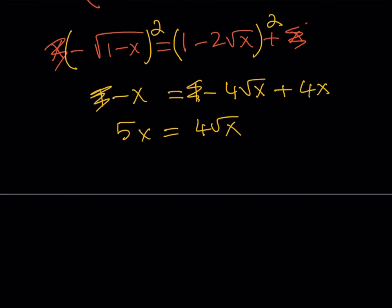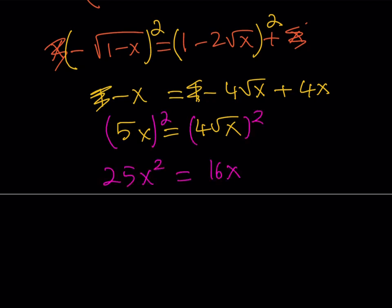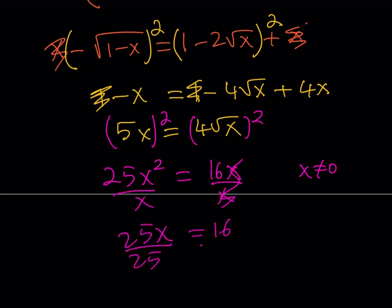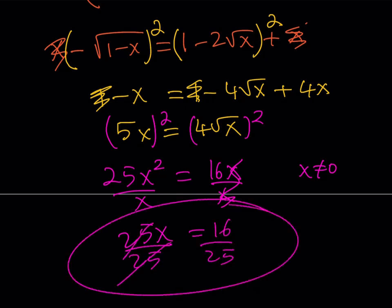If we square both sides again, we get 25x squared is equal to 16x. Since x does not equal 0, we divide both sides by x, giving 25x equals 16, and finally dividing by 25 gives x equals 16 over 25. This brings us to the end of the video. Thank you for watching. I hope you enjoyed the video. I'll see you tomorrow with another video. Until then, be safe, take care, and bye-bye.